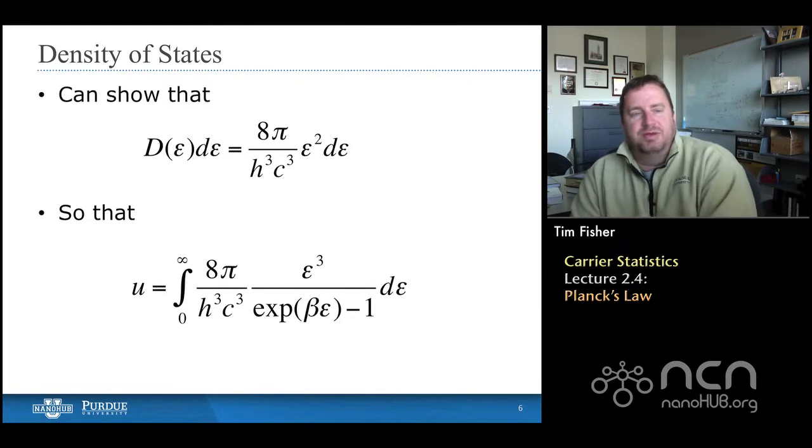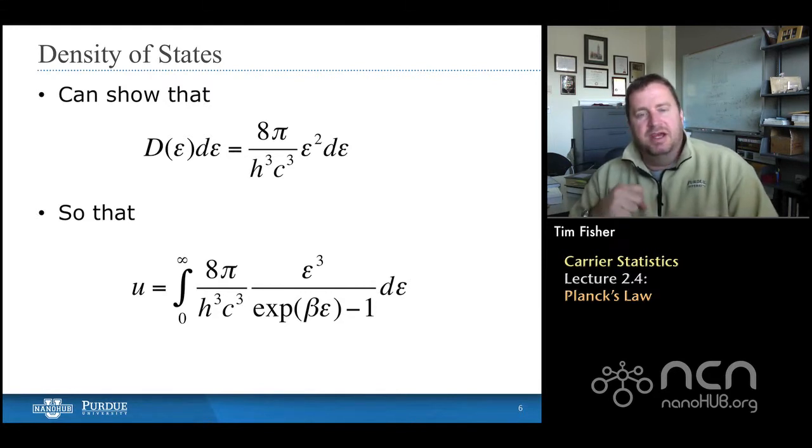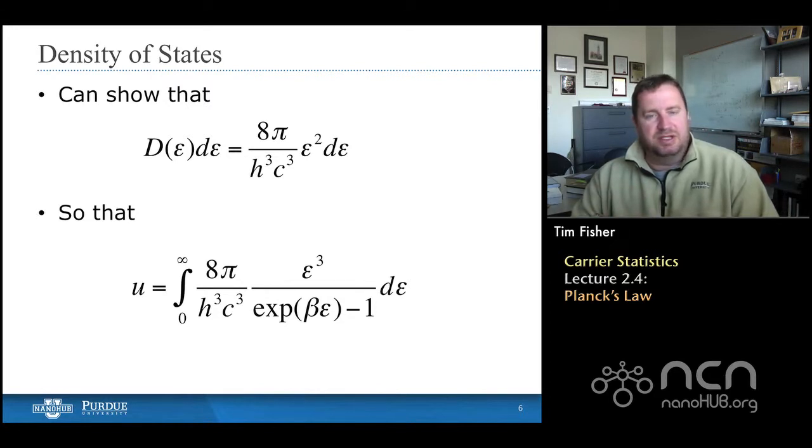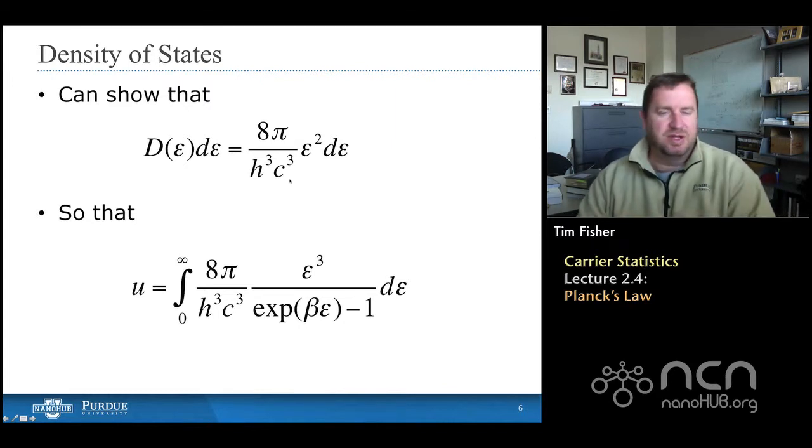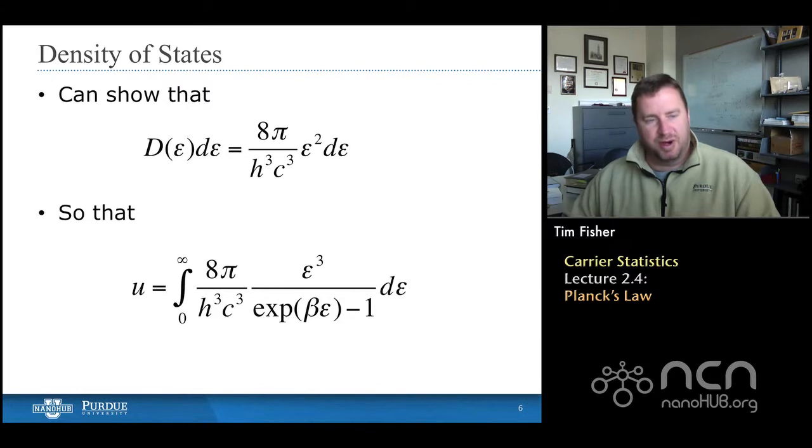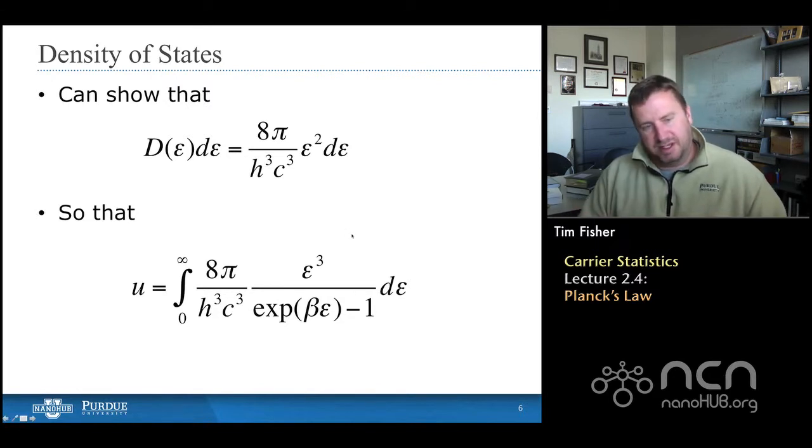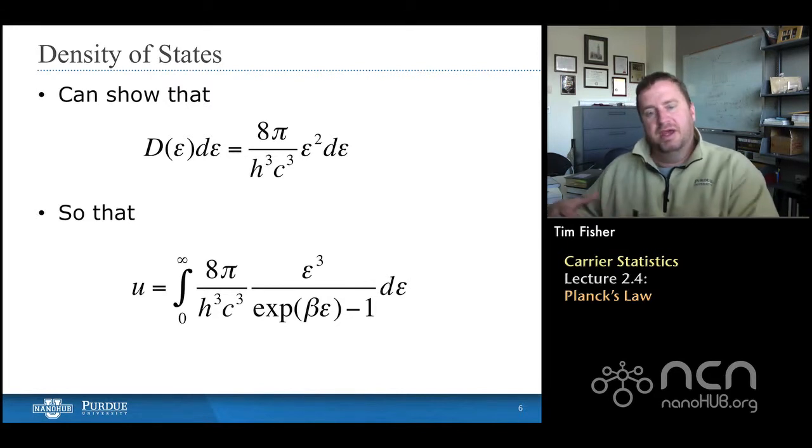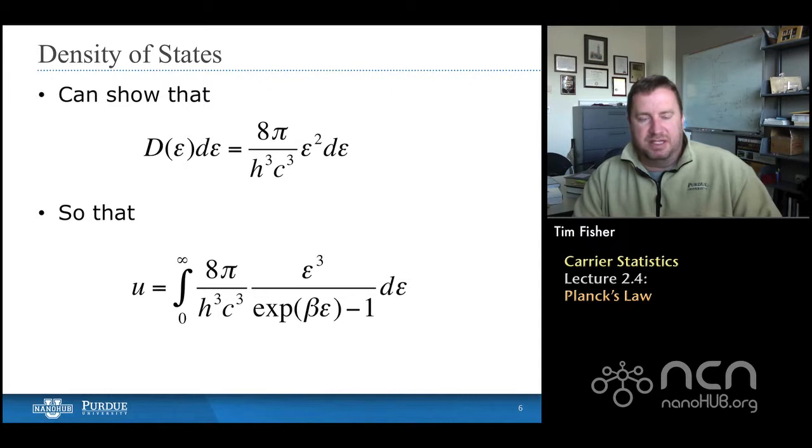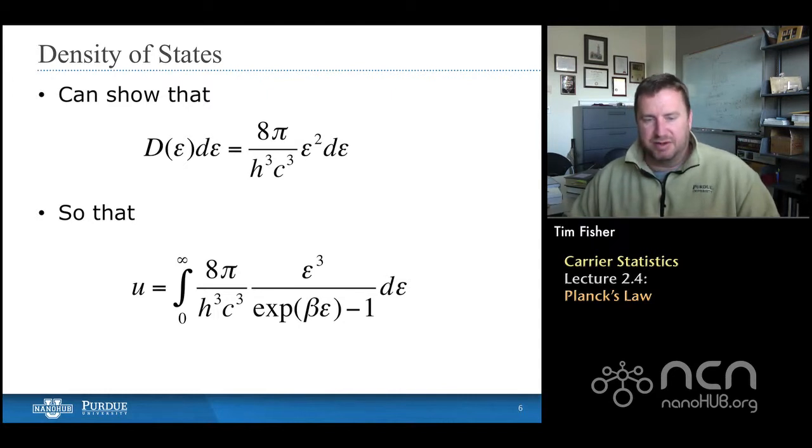Now, this is something where we won't derive the density of states for these photons here. It's not too difficult to do. We might have you do it as an exercise. But what we find is that the density of states for this linear dispersion goes as the energy squared. And so that's, we've seen that a few times, and so it shouldn't be too surprising. And when we do the substitutions, put all of these things, these two terms, the average energy of a mode and the density of states together into this integral we find that we can express the specific internal energy U as an integral over energy space. It looks pretty simple. It looks like it's something we could deal with mathematically if we needed to. And indeed, that should be the case.